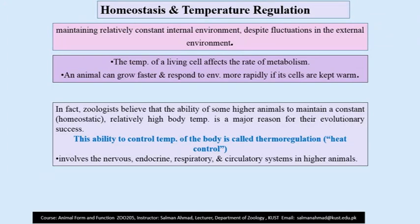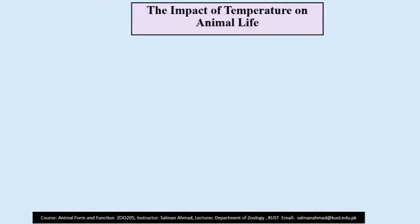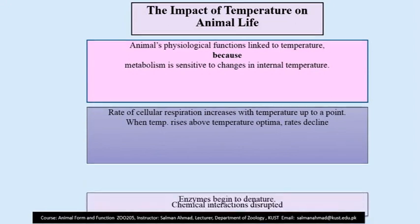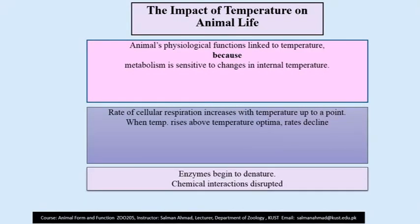Thermoregulation means the ability to control internal body temperature. A multitude of body systems are involved in thermoregulation and homeostasis — these are the nervous system, endocrine system, respiratory system, and circulatory system in higher animals. The physiological functions and metabolic activities of animals are sensitive to changes in internal temperature. The rate of cellular respiration and enzyme activity increases with an increase in temperature up to a certain limit, known as the temperature optimum.